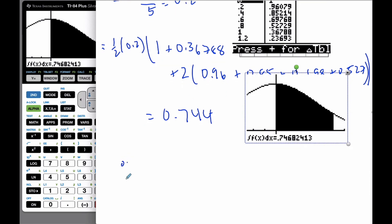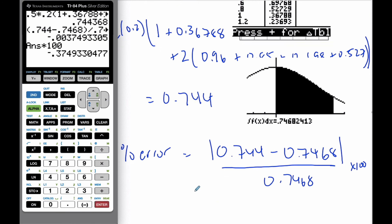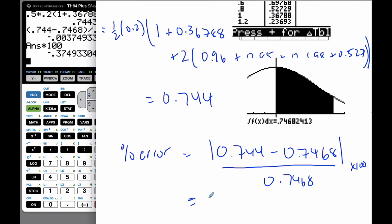And if I want to find the percent error, the percent error, I'm going to go 0.744 minus 0.7468, absolute value of that, over 0.7468 times 100. And so if I find that value out, I'm going to go 0.744 minus 0.7468, divided by 0.7468, and then I'm going to times it by 100, recognizing - so by percent error, recognizing I really want the positive value, is 0.375% off.